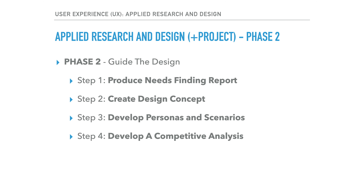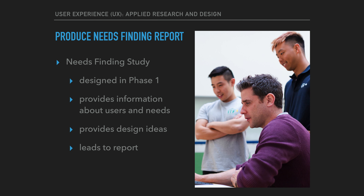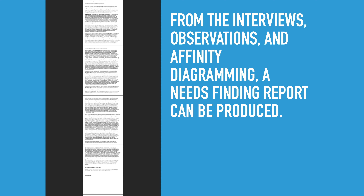Step one is to produce the needs finding report. This step involves doing the needs finding study, which was previously designed during phase one. The needs finding study provides information about the users and their needs, and will provide general design ideas and a general concept from interviews, observations, and affinity diagramming. Interviewing about four to five users should be a sufficient number and will allow the researcher to find the needs and current practices employed by users.